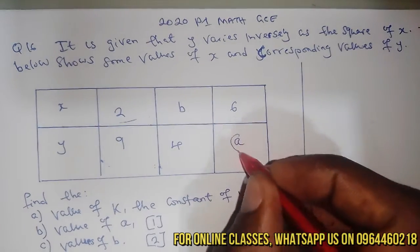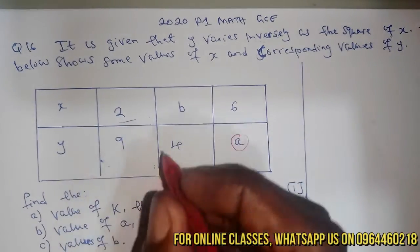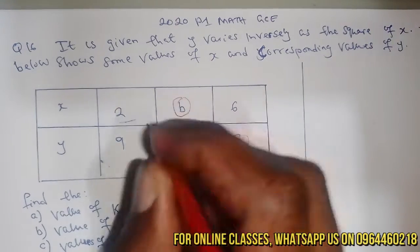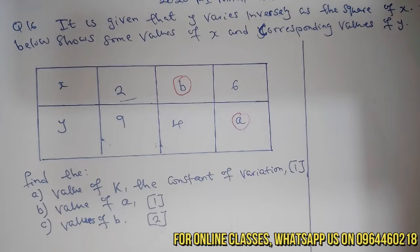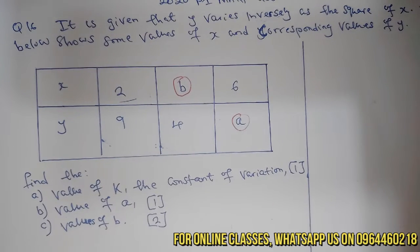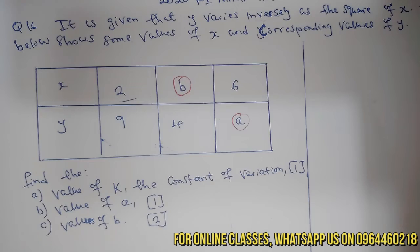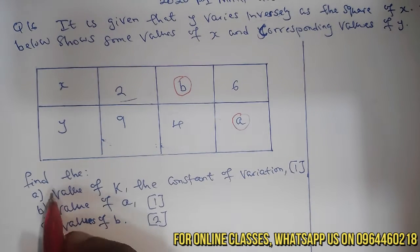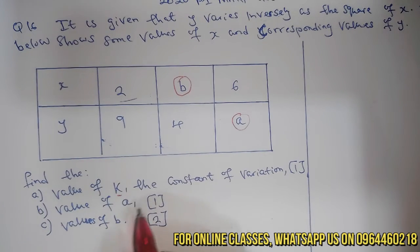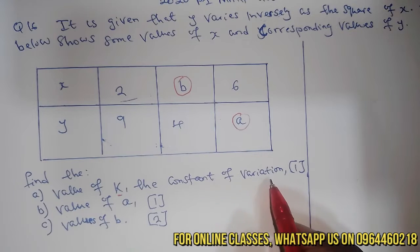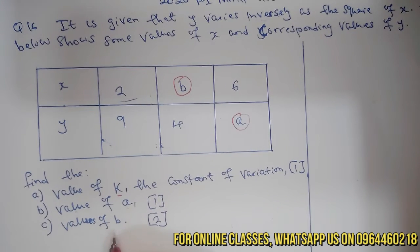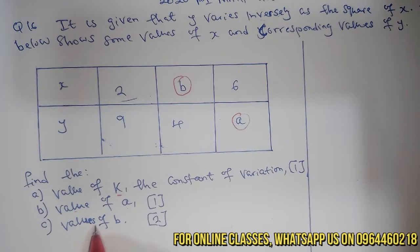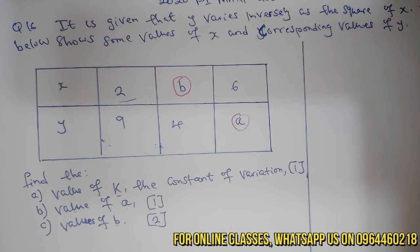We have some missing values in the table, so we need to find those. The question asks us to find the value of k, the constant of variation, then the value of a, and finally the values of b. It has two marks.